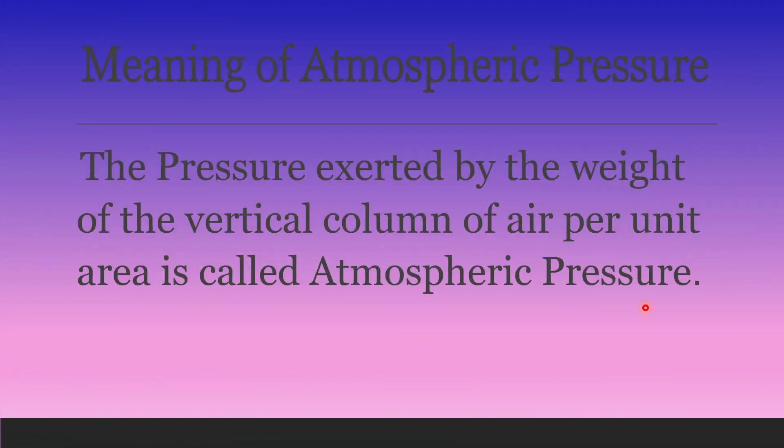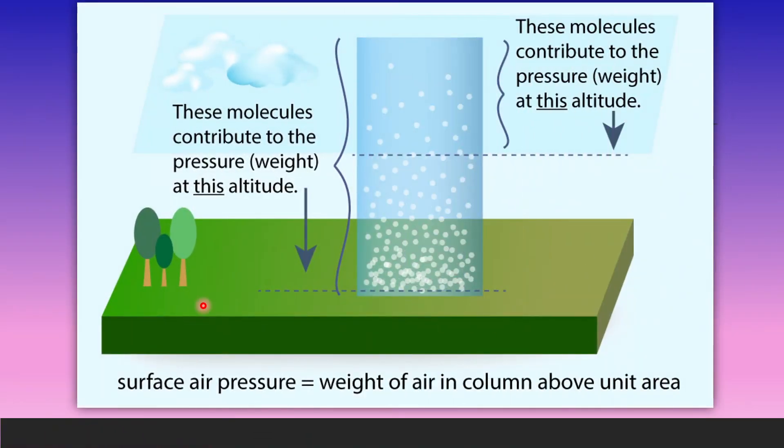So what do we actually mean by atmospheric pressure? It is the pressure exerted by the weight of the vertical column of air per unit area. Now when you look at this diagram you will be able to understand better. We all know that atmosphere is surrounding the earth. Atmospheric pressure is however not the same.